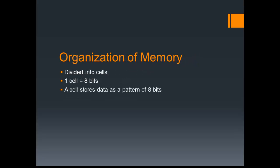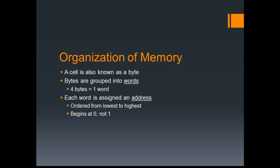So how does the computer actually use this to keep track of information? Well, data in a computer is divided into cells. One cell is a pattern of eight bits — a pattern of ones and zeros that is eight bits long — and that is one cell. A cell is also known as a byte, so one byte of data is worth eight bits. It's kind of like saying one dollar is worth four quarters.